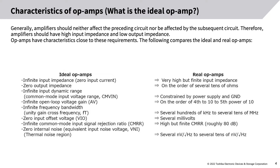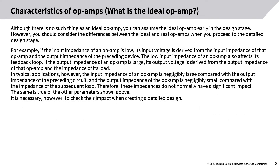Characteristics of op amps: What is the ideal op amp? Generally, amplifiers should neither affect the preceding circuit nor be affected by the subsequent circuit. Therefore, amplifiers should have high input impedance and low output impedance. Op amps have characteristics close to these requirements. The following compares the ideal and real op amps. Although there is no such thing as an ideal op amp, you can assume the ideal op amp early in the design stage. However, you should consider the differences between the ideal and real op amps when you proceed to the detailed design stage.